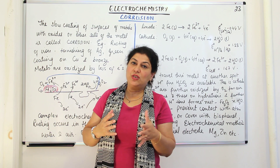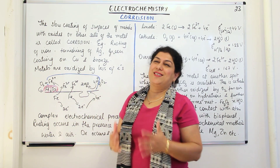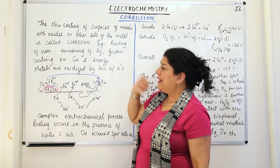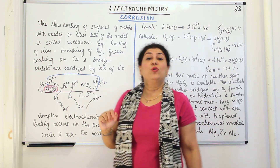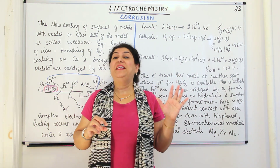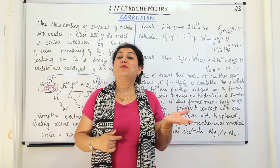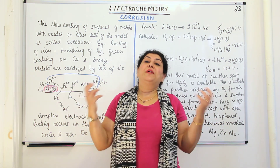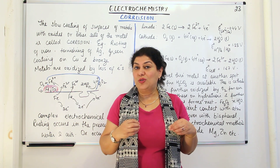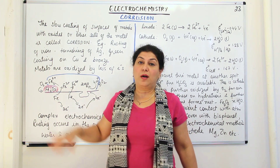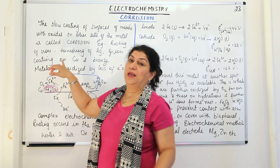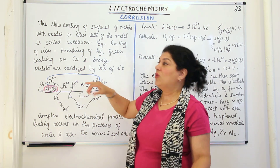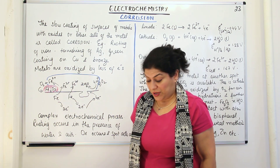Corrosion is a destructive reaction with the atmosphere. The Statue of Liberty is green in colour and it was made up of copper. Copper gets corroded and acquires a coating of copper carbonate which is greenish in colour, and that's why you get a green coating on copper and bronze.